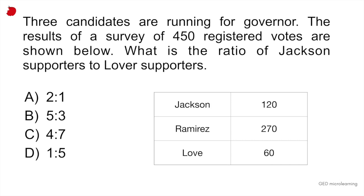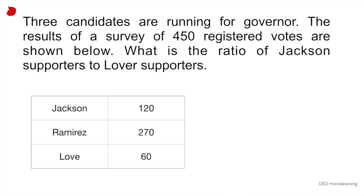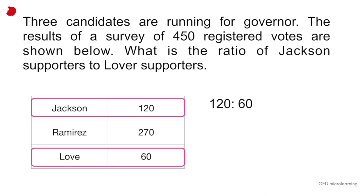If you look at the table, and they're asking us the ratio of Jackson to Love, Jackson has 120 supporters, so 120. And then Love has 60 supporters. So that's the ratio, 120 to 60.